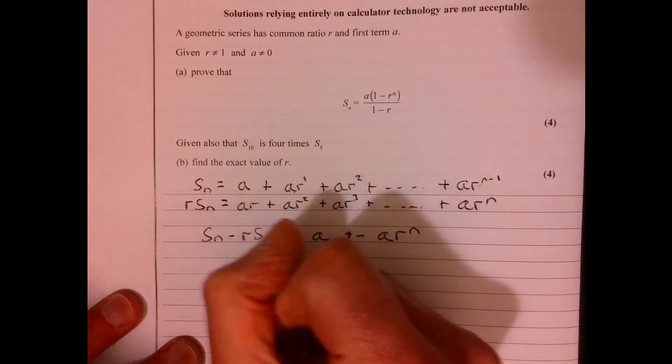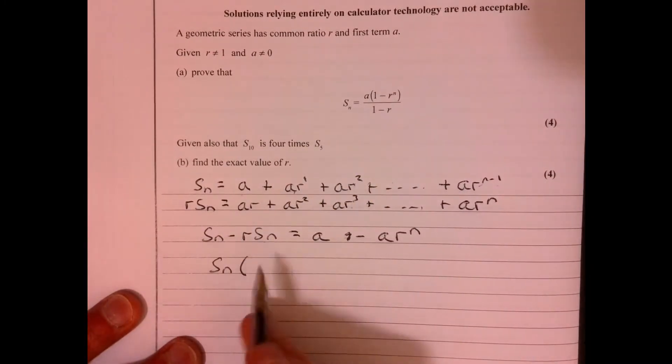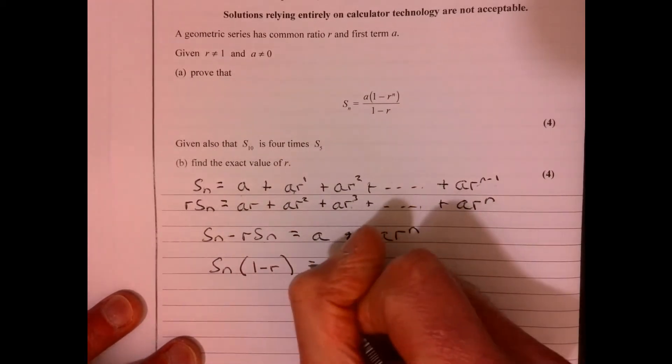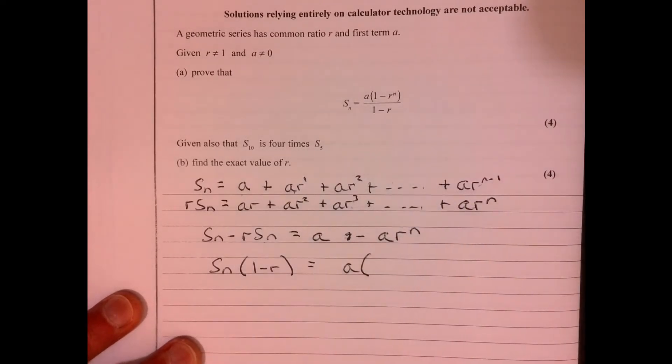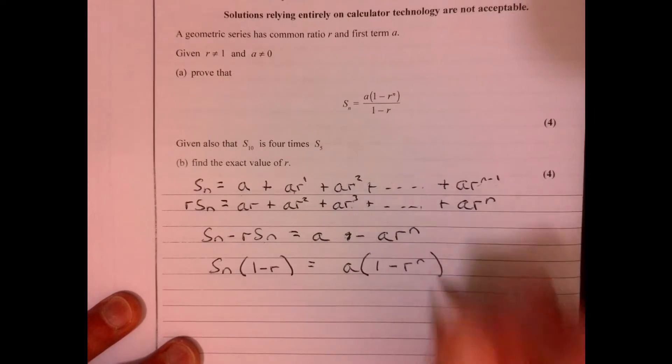Okay, so let's just factorize some stuff. So we can factorize this left-hand side, so we've got 1 minus r, and then we can factorize this side. So we've got a, take out, 1 minus r to the power of n